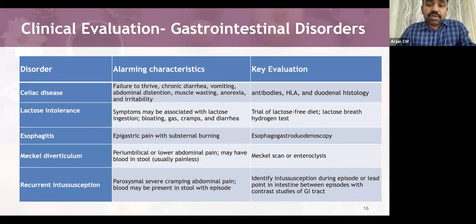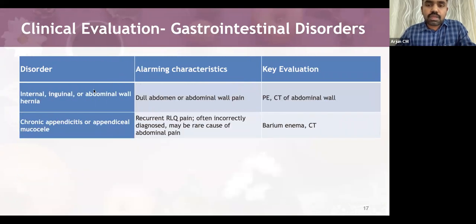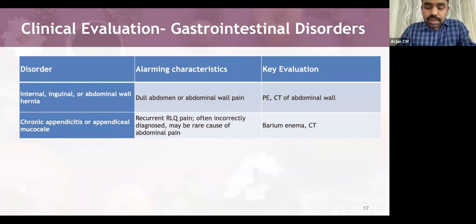Surgical conditions not to be missed include: Meckel's diverticulum (peri-umbilical or lower abdominal pain, blood in stools); recurrent intussusception (paroxysmal severe cramping pain with blood in stools, requiring contrast studies and Meckel's scan); internal inguinal or abdominal wall hernias (severe abdominal wall pain); and chronic appendicitis or appendiceal mucocele (recurrent right lower quadrant pain). All these require imaging with ultrasound, CT abdomen, or barium enema.